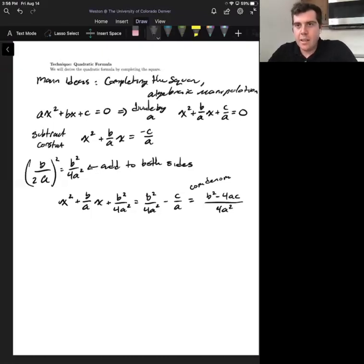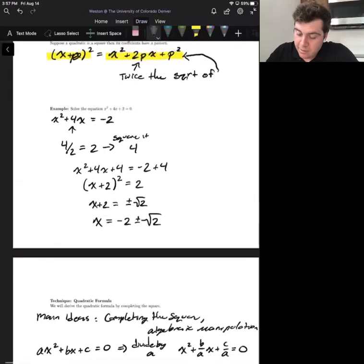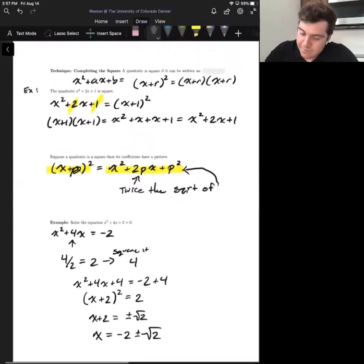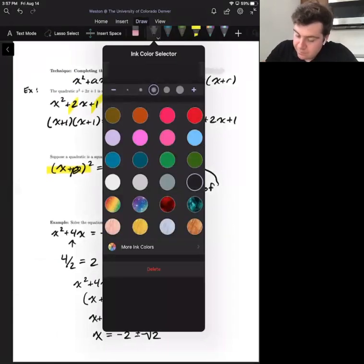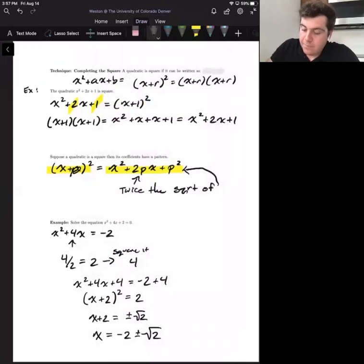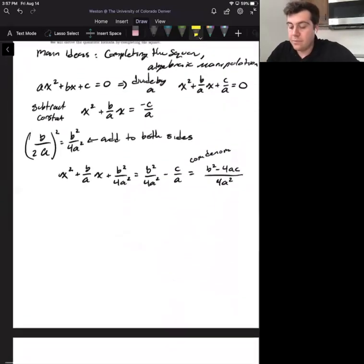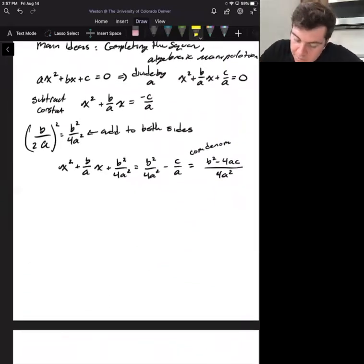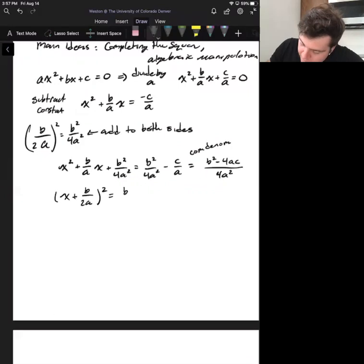Now remember, the left hand side is a square quadratic now, which means we get to write it in that nice form that we saw in the last video. We have that same x plus p squared equals x squared plus 2px plus p squared. So that's going to tell us that the left hand side can be rewritten as x plus b over 2a, whole quantity squared, equals b squared minus 4ac all over 4a squared.